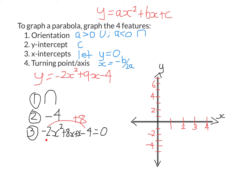Now I factorise the first two terms using the highest common factor, which is negative 2x. For the last two terms, x minus 4, they don't share a common factor, so I just take out a common factor of 1. At this step I should get two brackets exactly the same — x minus 4 — so I can do the next step.